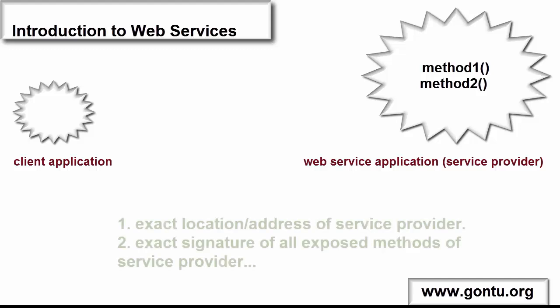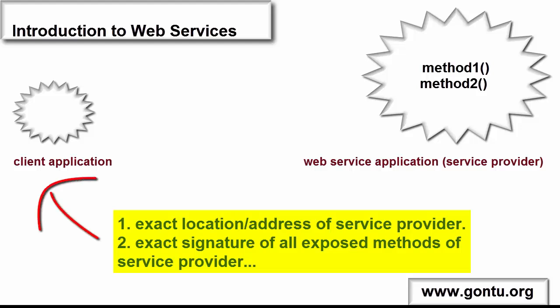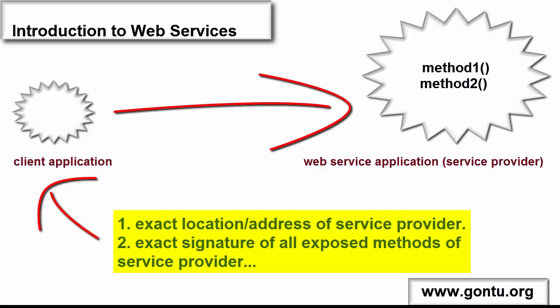Basic information like the exact location — the IP address and port number where that web service application is running — and the exact signature of the methods which that web service application has opened for other applications, along with other related information. The big question is: how does a client get this information? The idea is that a developer puts all such basic information of his web service application in a file in XML format and provides it to all users who want to utilize services offered by his web service application. Once the client has this file, it can happily make a call to the methods of that web service application.